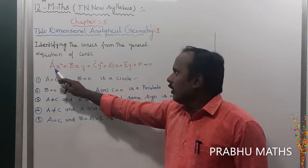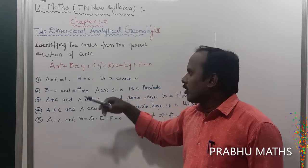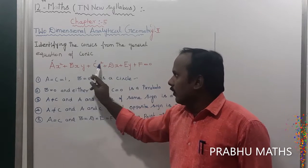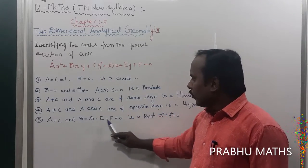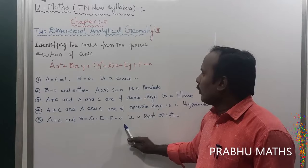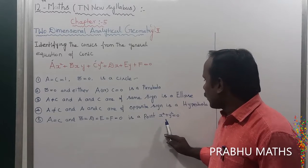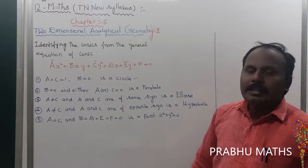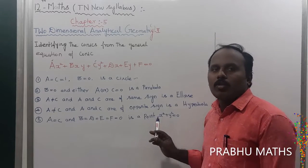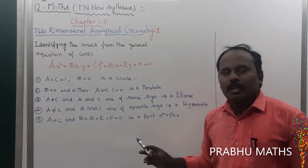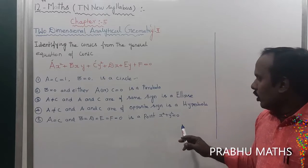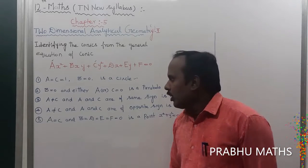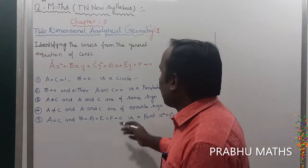Last condition: a is equal to c, b is 0, and all remaining coefficients are 0, giving x² + y² = 0, which means x = 0 and y = 0. This is called a point.